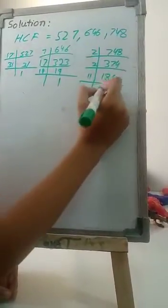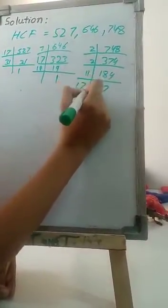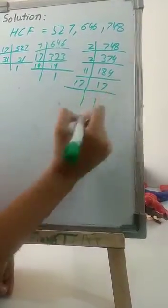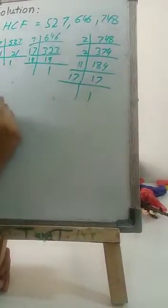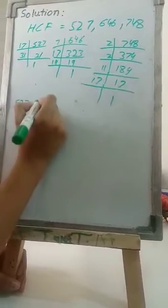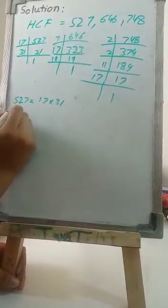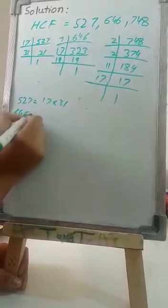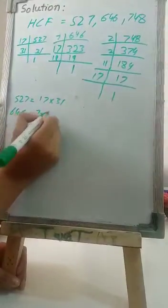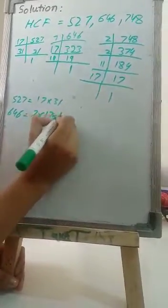So we will get 17 divided by 17, because 17 is a prime number. So 527 equals 17 multiplied by 31. And next is 646 equals 7 multiplied by 17 multiplied by 19.